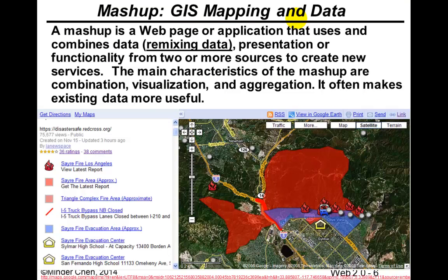Let me use an example to describe the so-called data mashup. This is a screen snapshot of California wildfires a few years ago. Behind the scene it's really Google Maps — the satellite image from Google Maps — but we're seeing additional symbols or icons in color-coded areas showing where the fire is on the map, and also where the evacuation centers are in the local community. Those pieces of information are additional data overlaid on top of the basic Google mapping application.